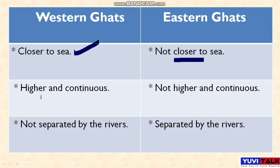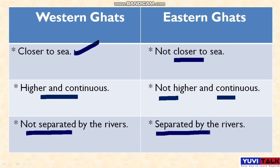The second difference is that the Western Ghats are higher and continuous, while the Eastern Ghats are not higher and continuous. The third difference is that the Western Ghats are not separated by rivers, whereas the Eastern Ghats are separated by rivers.